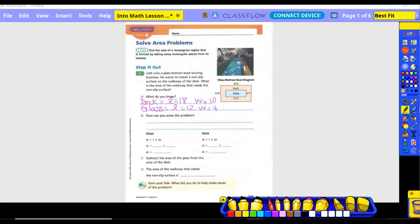How can we solve the problem? We're going to use the area formula. Area equals, so for the deck, our area would equal 18 times 10. For the glass, our area would equal 12 times 4. So 18 times 10 would be 180 square feet.